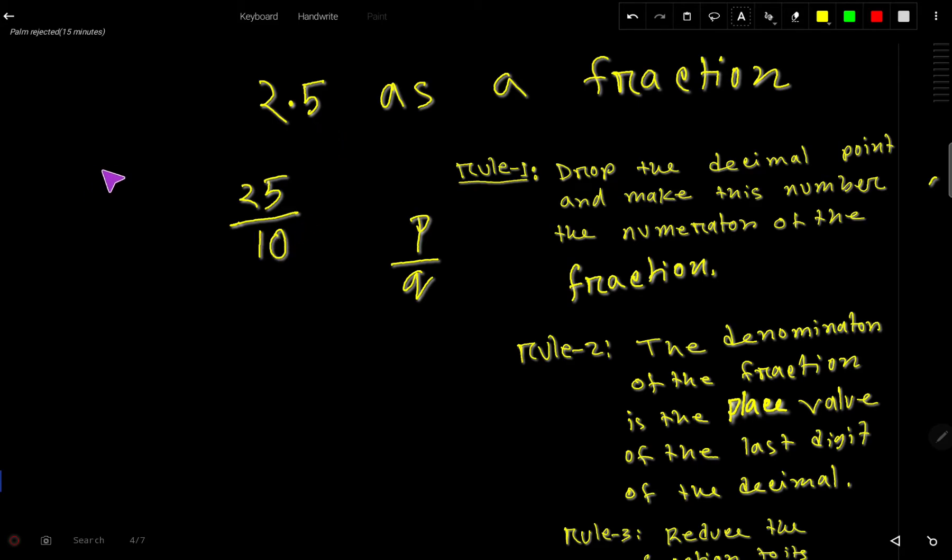Here is another way. Just drop the decimal point and write the number that you are getting, so 25. And for denominator consider for point we will write 1 and for every digit after point we will write 0. So we have one digit so we will write 10.